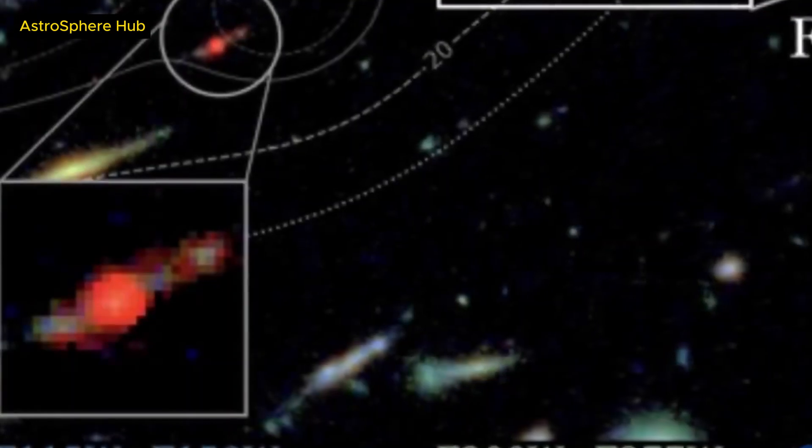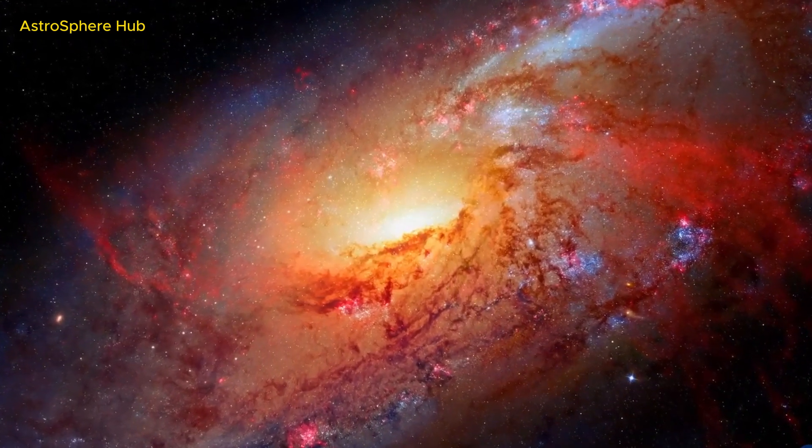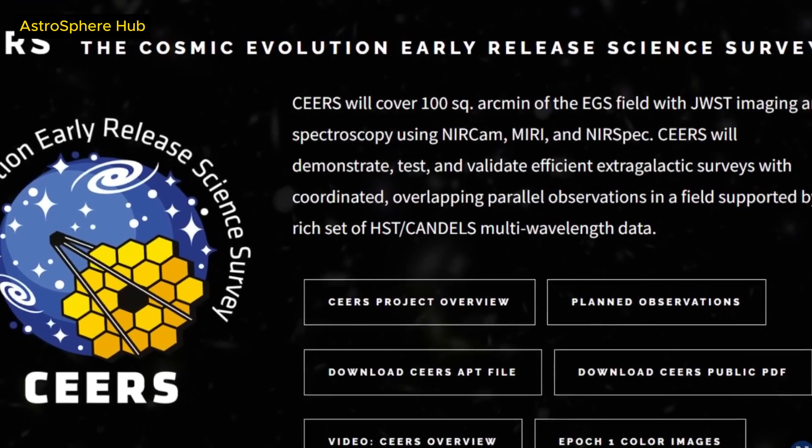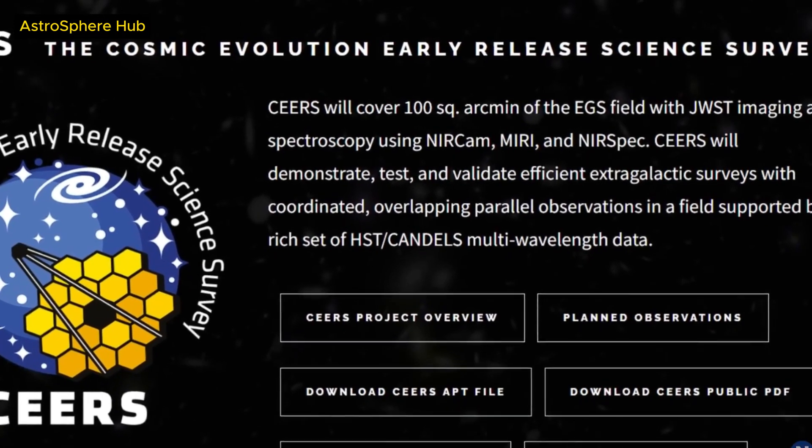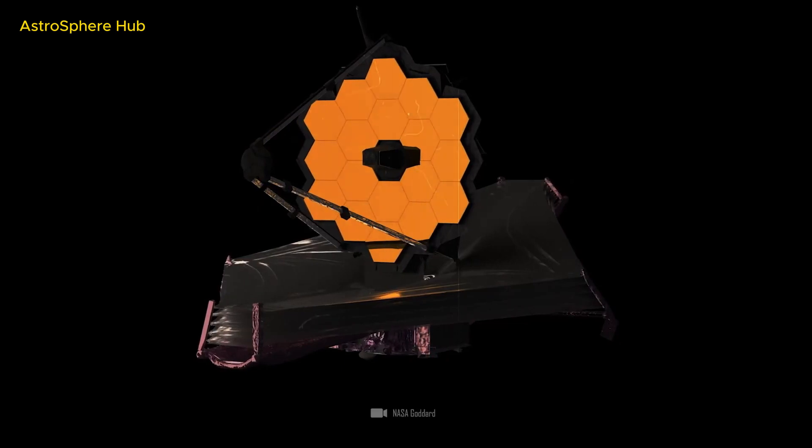This allows Webb to observe galaxies that would otherwise be too dim to see. This galaxy is located behind a massive cluster of galaxies, which acts as a natural telescope and amplifies the light of the Firefly Sparkle Galaxy by a factor of 10.